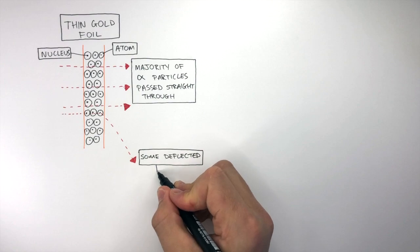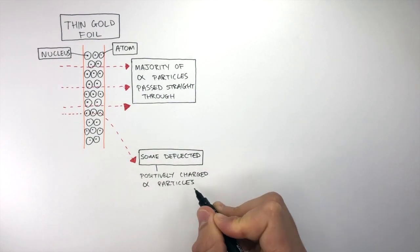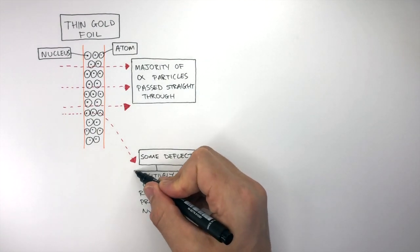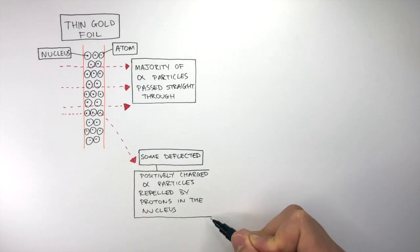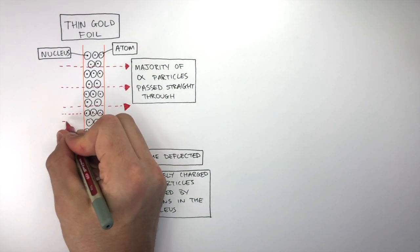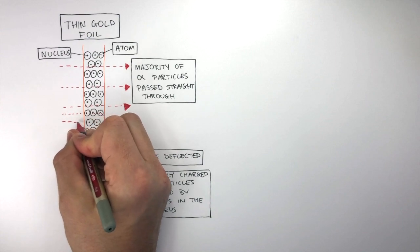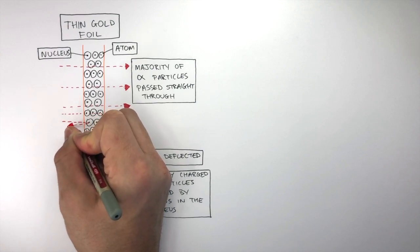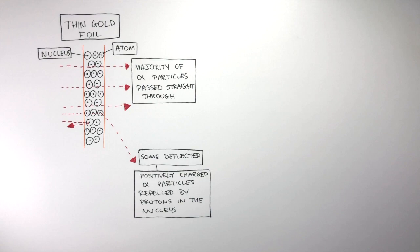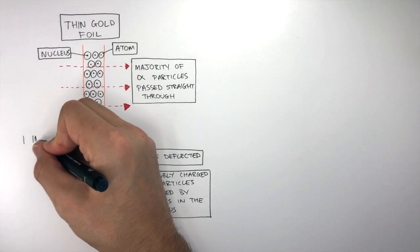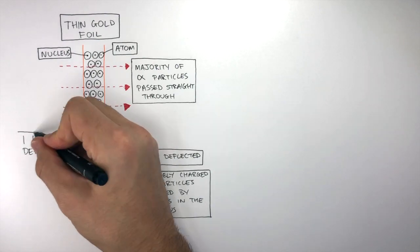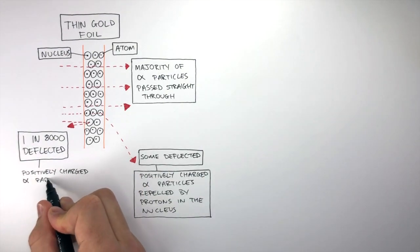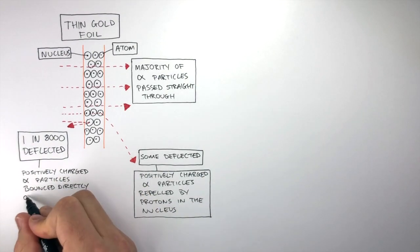This happened because the positively charged alpha particles were repelled by the protons in the nucleus. The same charges always repel; different charges will attract. Very rarely, some alpha particles coming in at a straight line would be deflected straight back as they were repelled by the positive charge of the nucleus. One in 8,000 alpha particles were deflected straight back because positively charged alpha particles bounced directly off the nucleus.